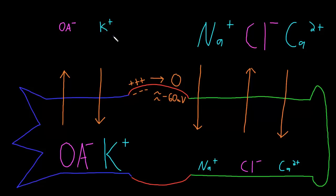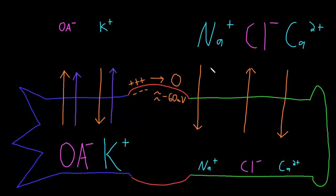The second force can be thought of as a diffusion force, or chemical force, related to the concentration gradients across the neuron membrane. Particles in solution always try to move from higher to lower concentration. The organic anions have a higher concentration inside, so their diffusion force also tries to drive them out. Potassium has a higher concentration inside, so its diffusion force tries to drive it out — opposing its electrical force. Sodium's electrical and diffusion forces both drive it into the neuron. Chloride's diffusion force tries to drive it in, opposing its electrical force. Calcium, like sodium, has both forces driving it into the neuron.